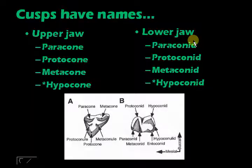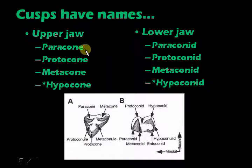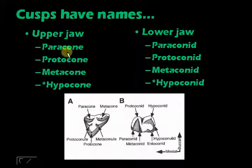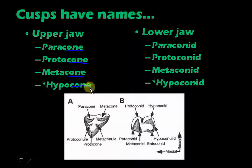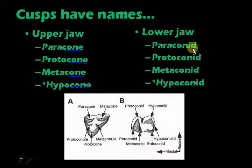Molars and premolars have a lot of cusps, and these cusps actually have names. Depending on where you are: if you are in the upper jaw, the cusps end in the suffix '-cone.' If you are in the lower jaw, you replace the 'e' at the end with '-id,' giving you '-conid.'